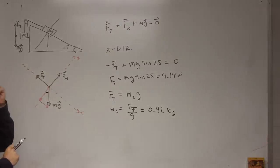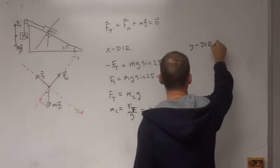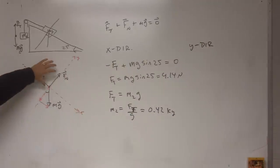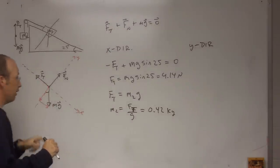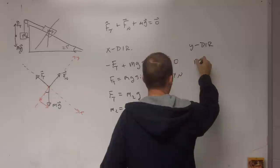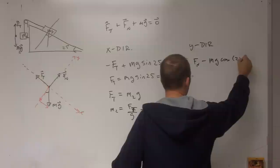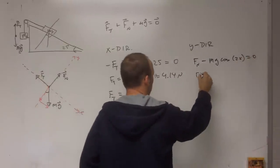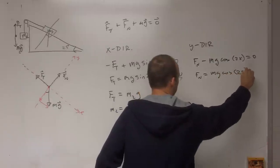Okay, now we can go into the y direction. So what force do I have? I have the normal force in the y direction and then part of gravity. And that's going to be the cosine of the angle because it's the adjacent side. So I have Fn minus mg cosine 25 equals zero. So Fn equals mg cosine 25.